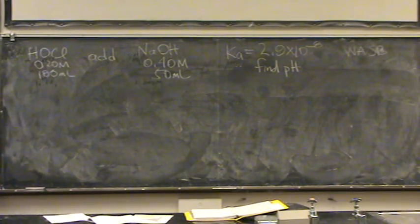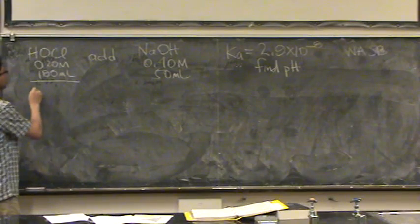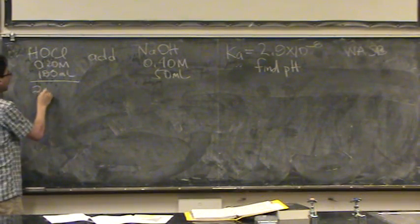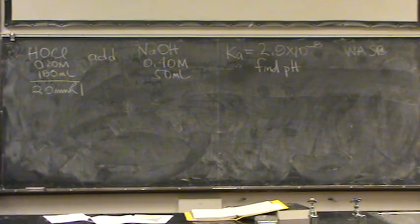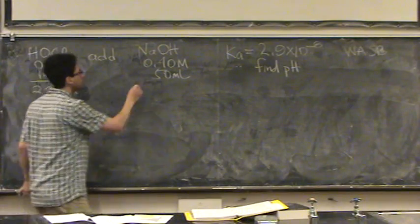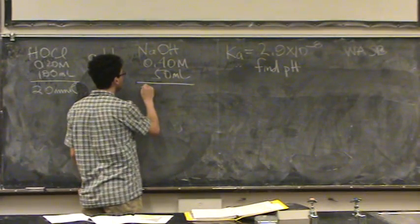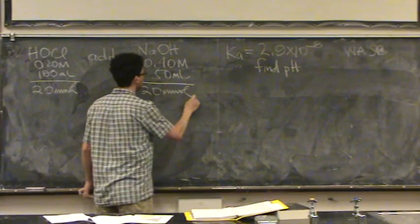So, I always want to start with a number of millimoles. If I multiply these two, 0.2 times 100, I'll get 20 millimoles of the weak acid. If I do the same for the strong base, 0.4 times 50, I'll also get 20 millimoles.